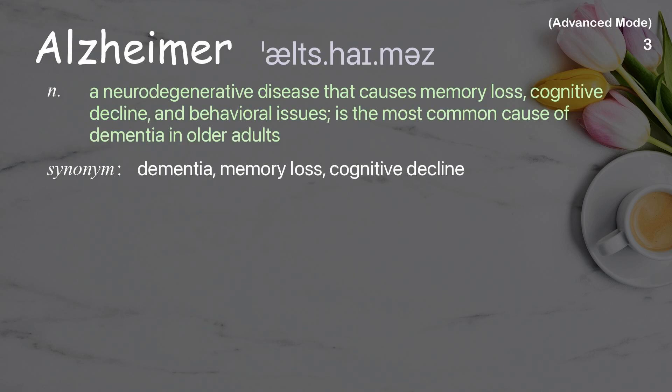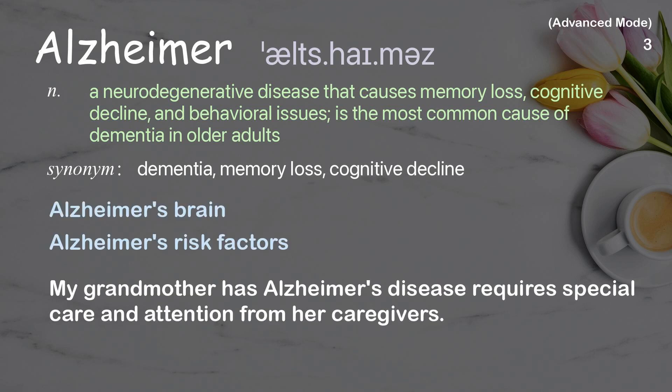Alzheimer: A neurodegenerative disease that causes memory loss, cognitive decline, and behavioral issues; it is the most common cause of dementia in older adults. Examples: Alzheimer's brain; Alzheimer's risk factors. My grandmother has Alzheimer's disease and requires special care and attention from her caregivers.